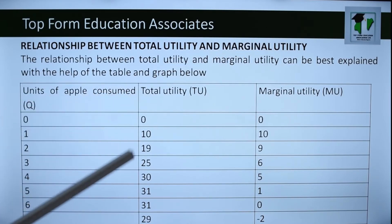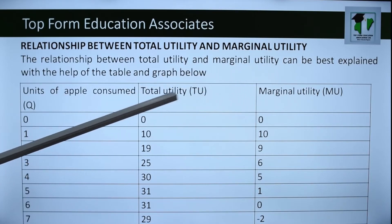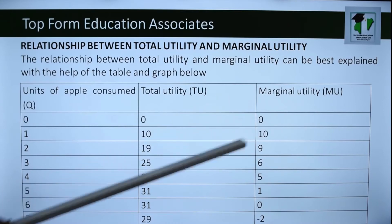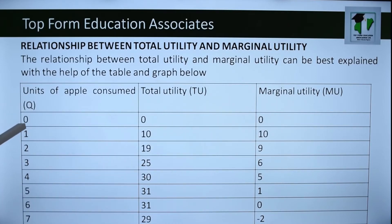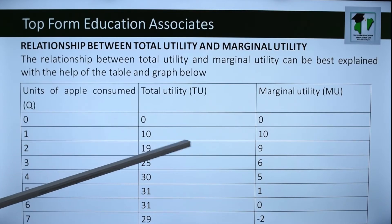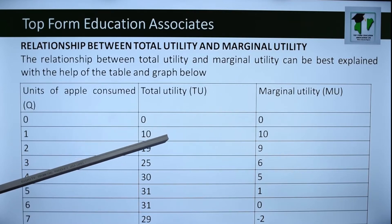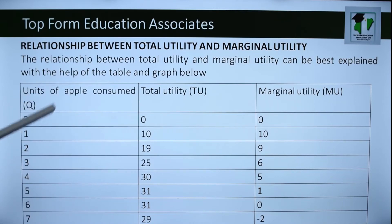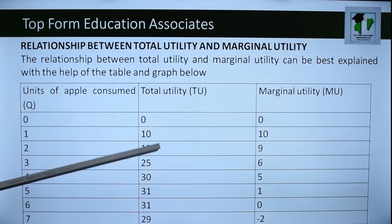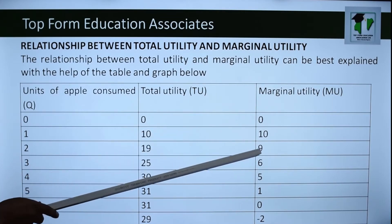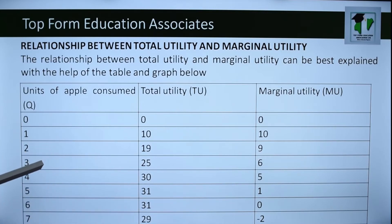The relationship between total utility and marginal utility can be best explained with a table and graph. Looking at units of apple consumed: when nothing is consumed, TU and MU are zero. When the first apple is consumed, TU = 10 and MU = 10 (calculated as 10 minus 0). When the second unit is consumed, TU increases from 10 to 19, while MU = 19 minus 10 = 9.